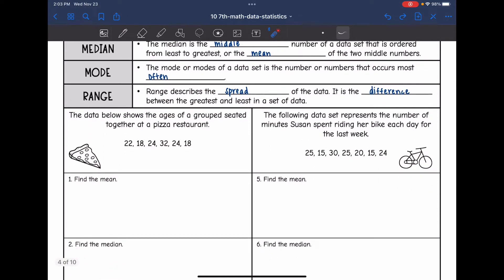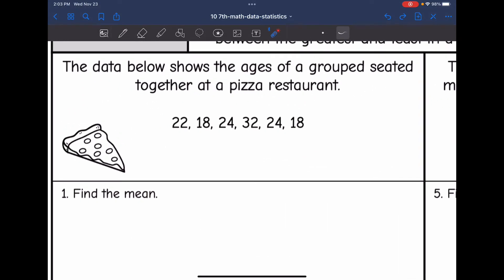So let's look at this first set of data. It says the data below shows the ages of a group seated together at a pizza restaurant. So the first thing it wants me to find is the mean.